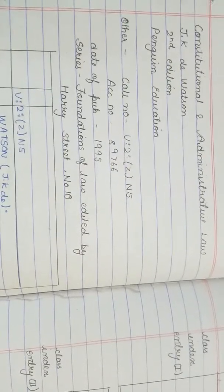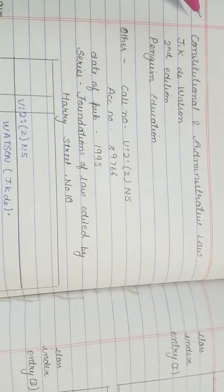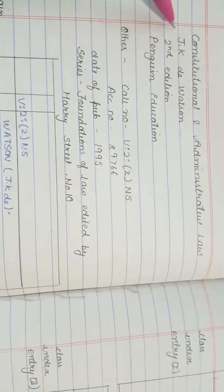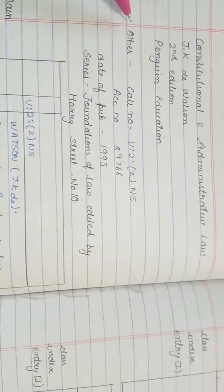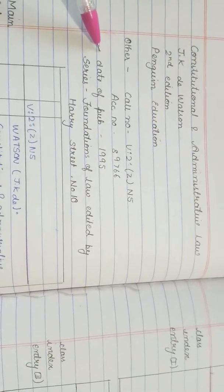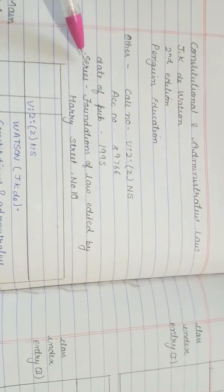Let's take one more example on CCC Cataloging. The book is 'Constitution and Administrative Law' by J.K.D. Watson, 2nd edition, Pequen edition, education. Other details include column number, ACC number, date of publication, series: Foundation of Law, edited by Harry Street, number 10.